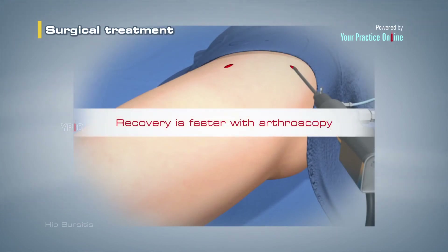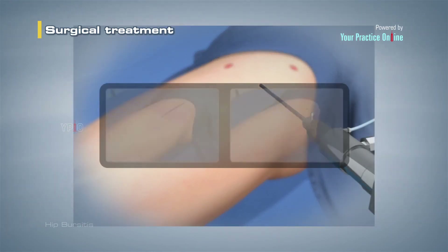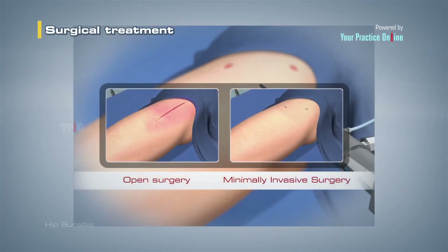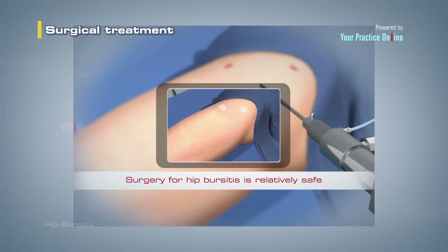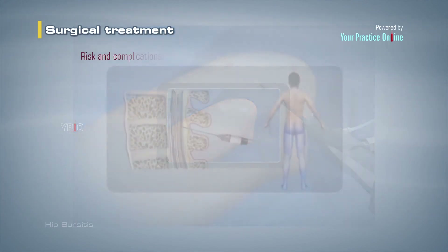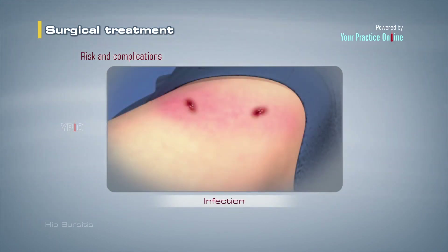Recovery is faster with arthroscopy compared to open surgery, as the size of the surgical incisions are very small. The surgery for hip bursitis is relatively safe. Risks and complications can occur due to anesthesia or due to infection in the surgical area.